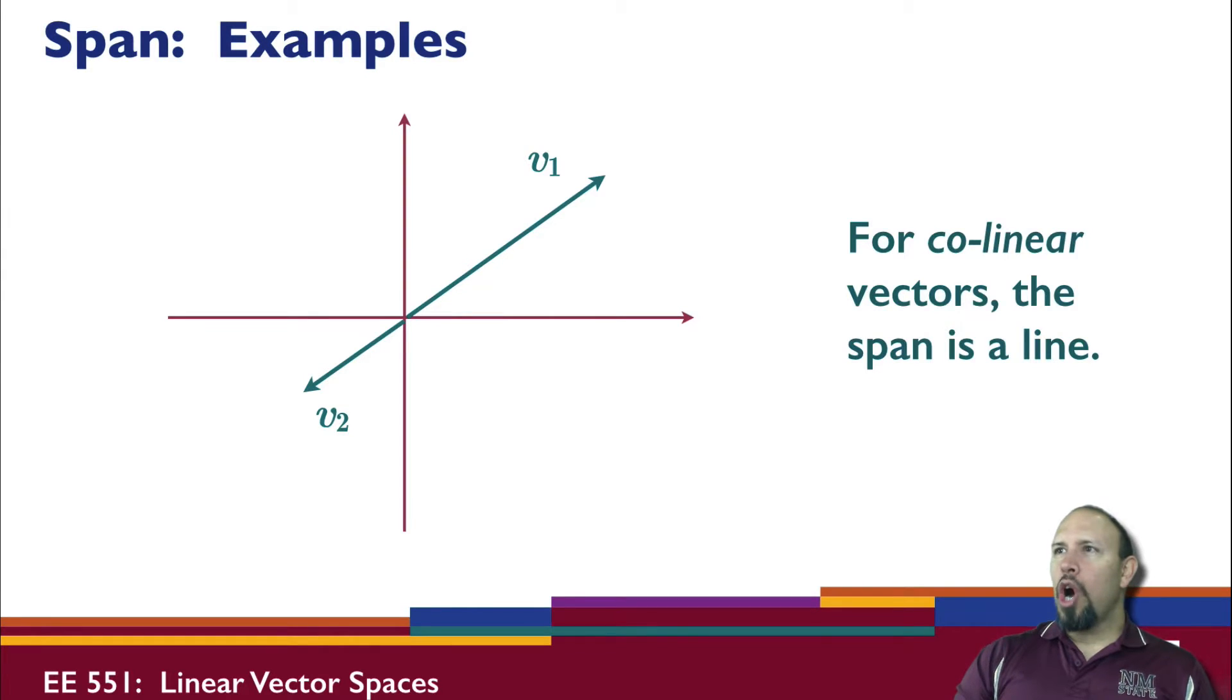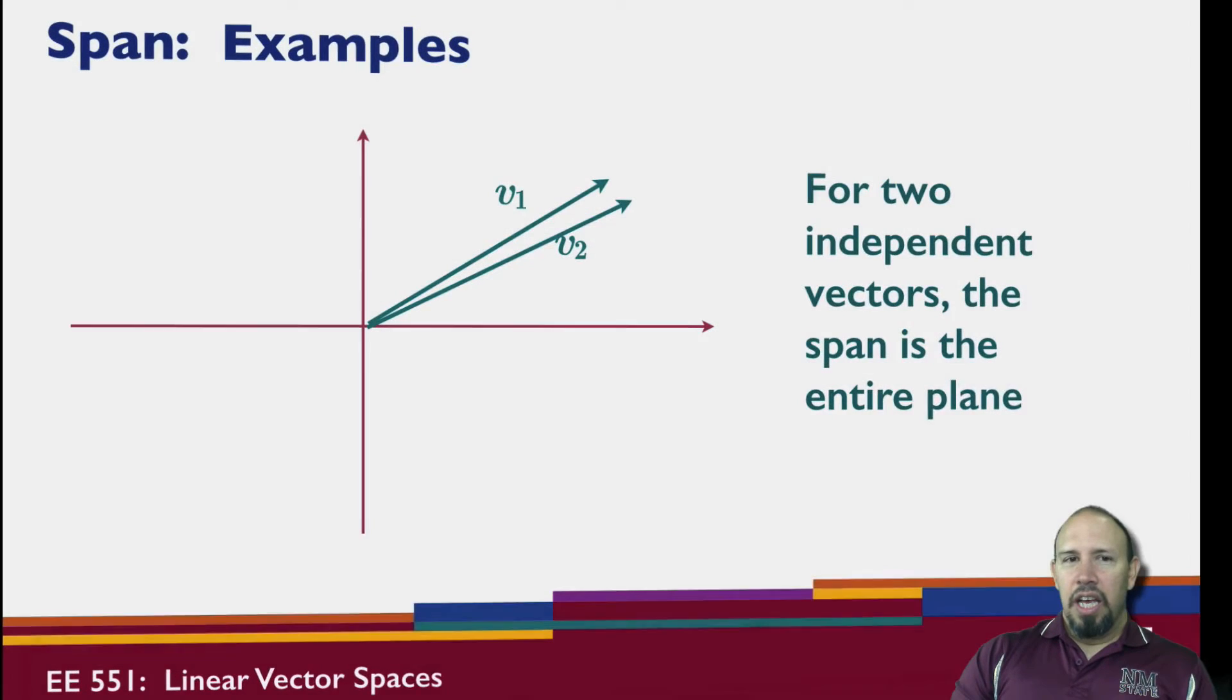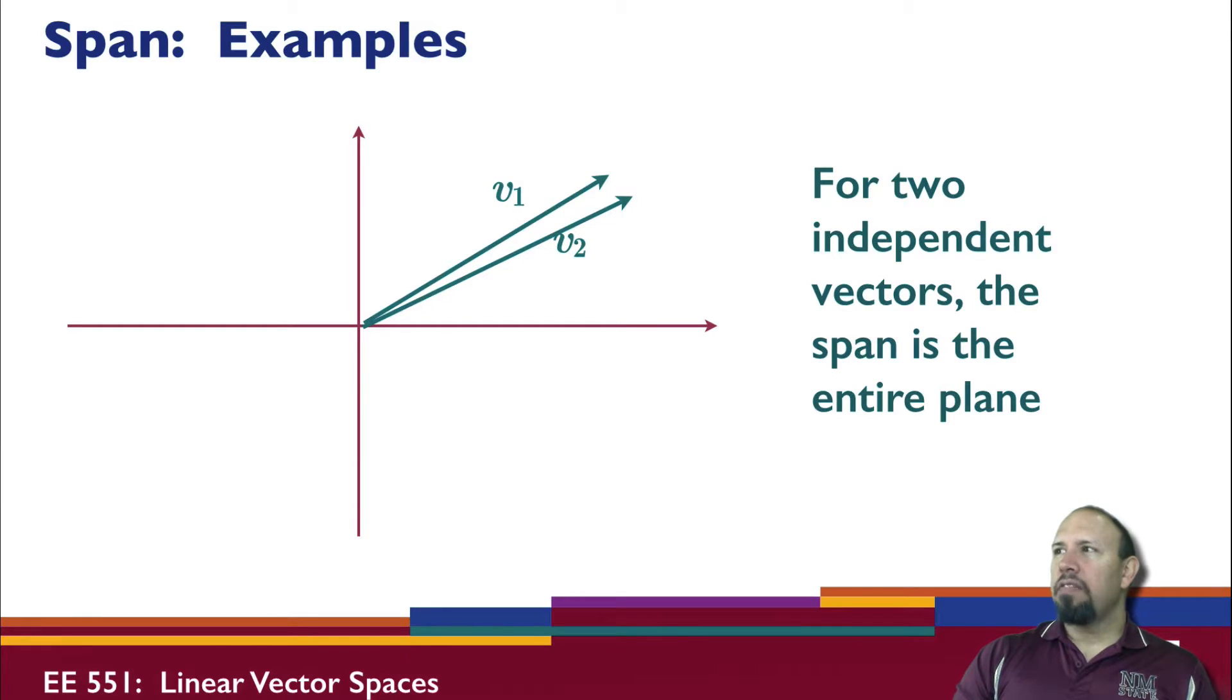Here I have two colinear vectors - that is, they're on the same line. The span of those two vectors is just the line. Here I have two independent vectors - they're not pointing in the same direction. In this case, the span is the entire plane.